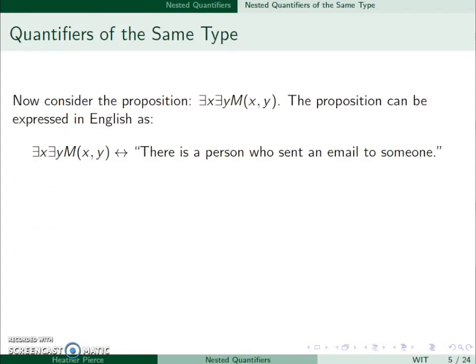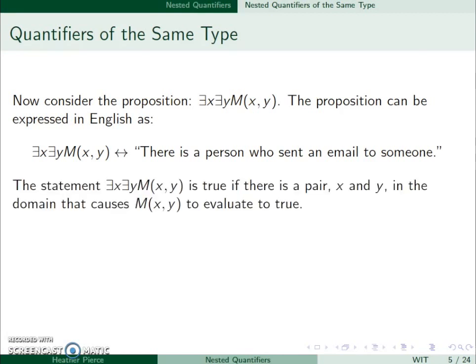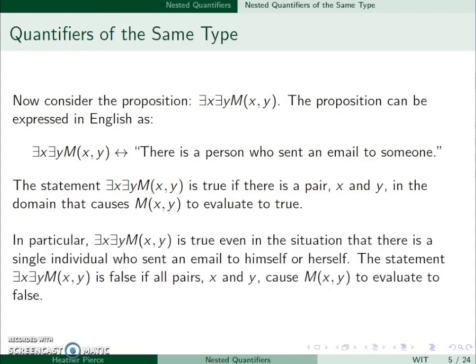Now let's look at this proposition: there exists an x and there exists a y such that M(x,y). In English, it's just there's a person who sent someone an email. This is true if there's a pair x and y in the domain that causes it to evaluate to true. So as long as one email was sent, this statement would be true. In particular, this is true even if a single individual sent themselves an email. It's evaluated to false if for all pairs x and y cause M(x,y) to evaluate to false. So the only way for this to be false is if there were absolutely no emails sent between group members or from a member to themselves.